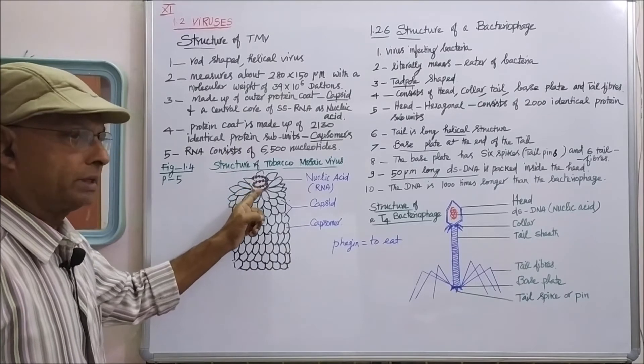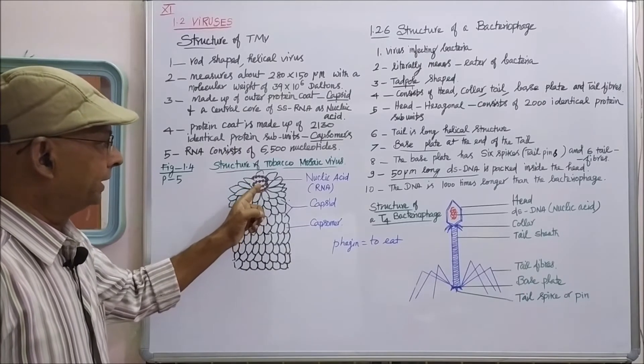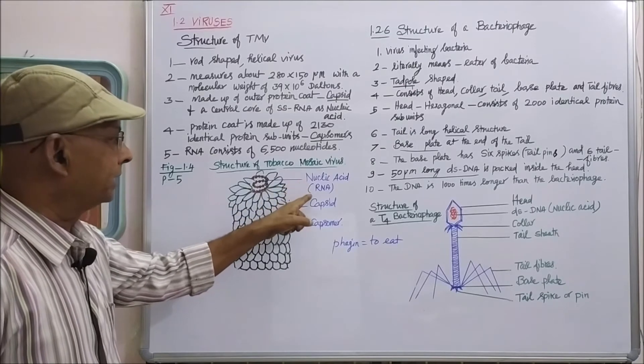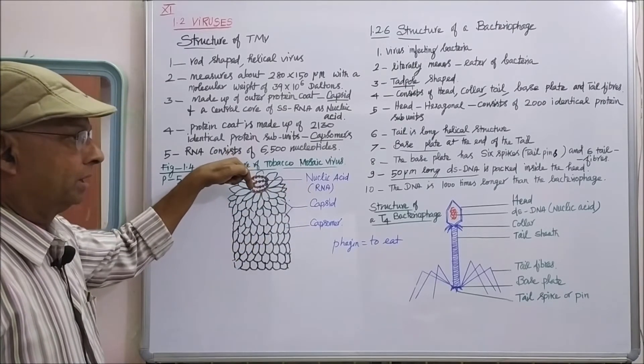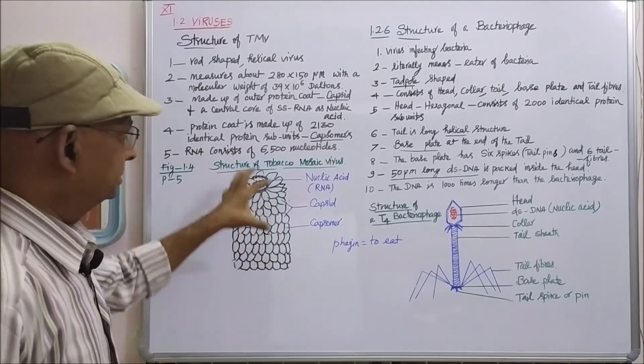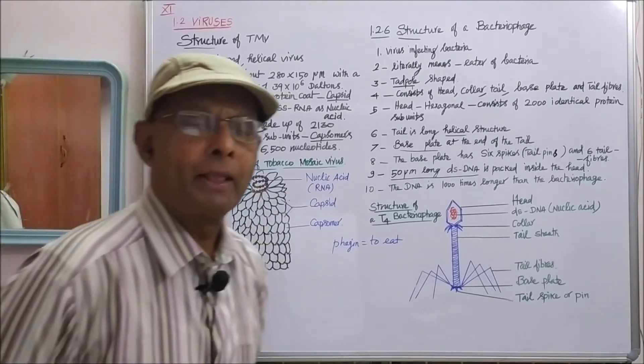At the center, there is a central core of nucleic acid. The nucleic acid is single-stranded RNA that is packed at the center, surrounded by the capsid protein coat. That is a very simple structure. Now, come to the bacteriophage.